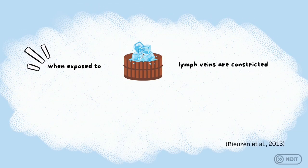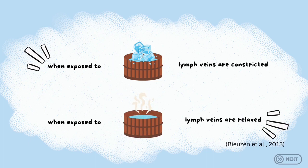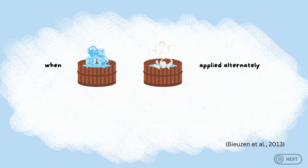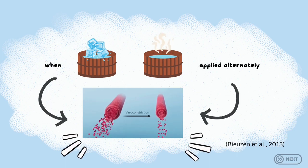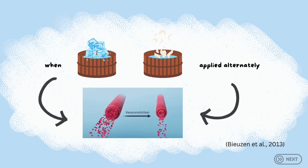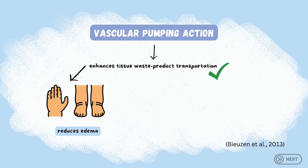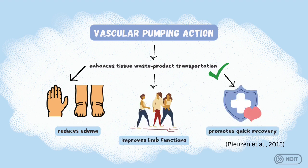Not only that, when exposed to cold water, the limb veins will be constricted, while when exposed to hot water, the limb veins will be relaxed. However, compared to the circulatory system, the lymphatic system has no central pump. Thus, when hot and cold water are applied alternately, there is intermittent vasoconstriction and vasodilation of the blood vessels, which results in a vascular pumping action. This pumping action enhances tissue waste product transportation, reduces edema, improves limb function, and promotes a quicker recovery.